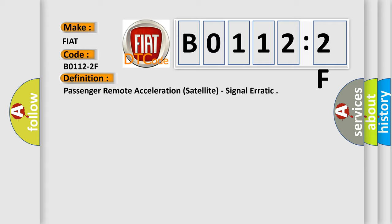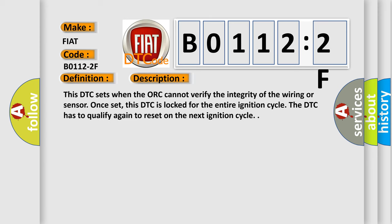And now this is a short description of this DTC code. This DTC sets when the ORC cannot verify the integrity of the wiring or sensor. Once set, this DTC is locked for the entire ignition cycle. The DTC has to qualify again to reset on the next ignition cycle.